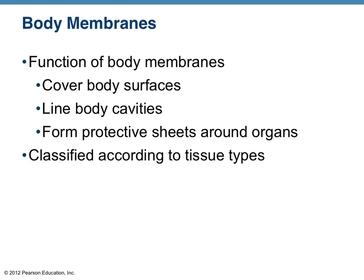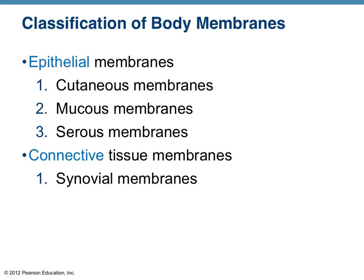In this screencast we're going to discuss body membranes as part of the integumentary system. Body membranes include the skin but also include the layers, coverings, or linings of internal cavities. We can classify them by the type of tissue. Three out of the four types we'll discuss are epithelial membranes, meaning they are composed of epithelial tissue. That makes sense because membranes are coverers or liners.